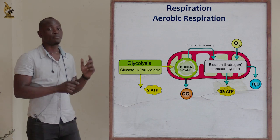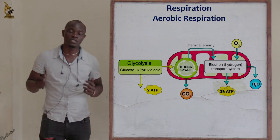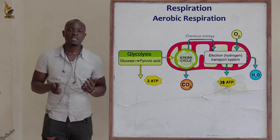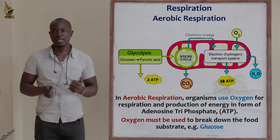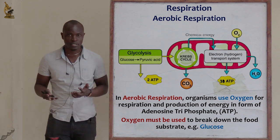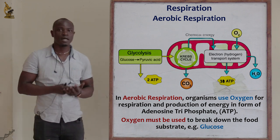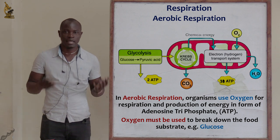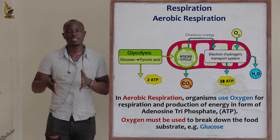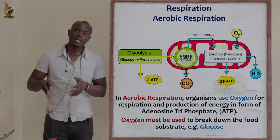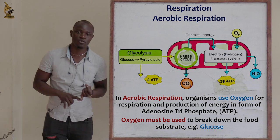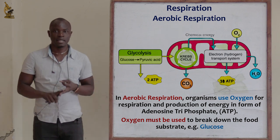Let's begin with the first type of respiration, which is referred to as aerobic respiration. Aerobic respiration mainly involves the breakdown of food substrate in the presence of oxygen to produce carbon dioxide, water, and energy.